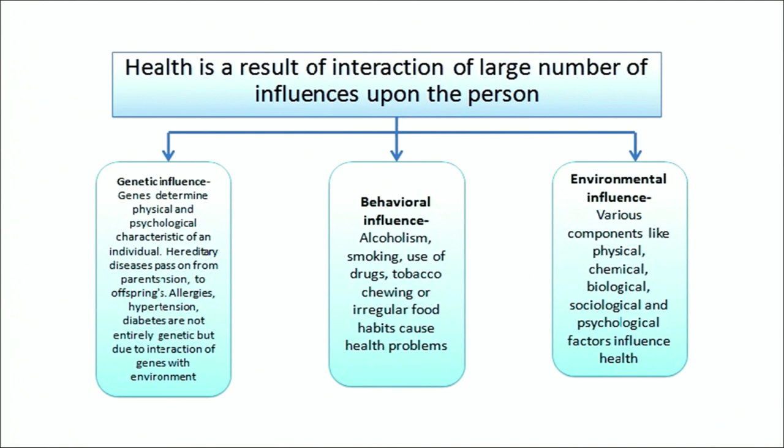Health is the result of interaction of a large number of influences upon a person, for example genetic influence, behavioral influence and environmental influence as shown in the flowchart. Genetics determines the physical and physiological characteristics of an organism. We all know that hereditary diseases are passed on from parents to offspring. Diseases like allergies, hypertension, diabetes, etc. are not entirely genetic.